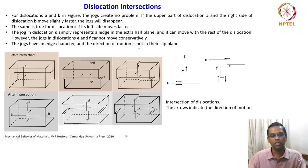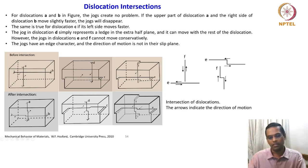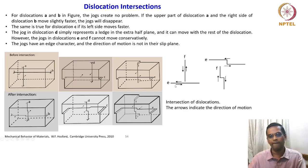If the direction of motion is not in the slip plane, they are going to encounter each other. The screw dislocation going in one direction will move upward and in another direction — meaning two screw dislocations move in a perpendicular direction. Then the jog will get into a very special situation.